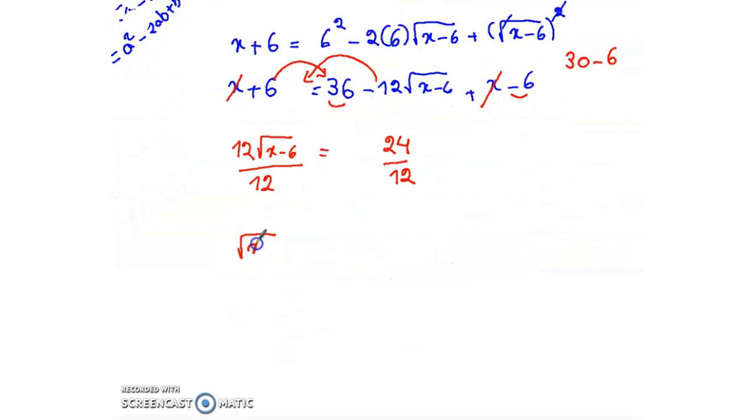√(x-6) = 2. Square both sides. x - 6 = 4. This implies x = 4 + 6 = 10.